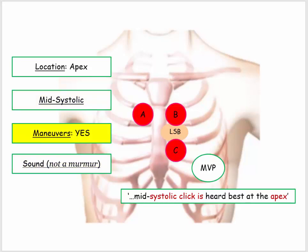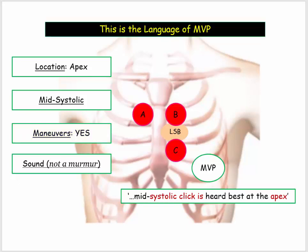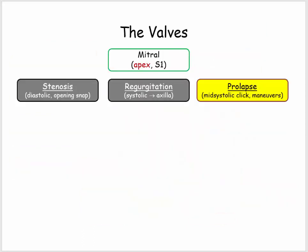This overview is the language of mitral valve prolapse. And just for context, here are the three disorders affecting the mitral valve: stenosis, regurgitation, and prolapse.